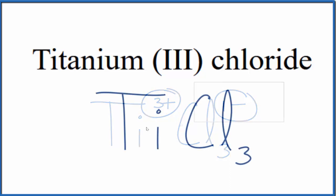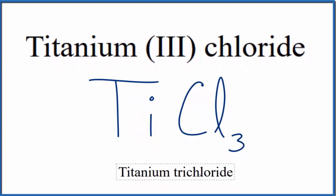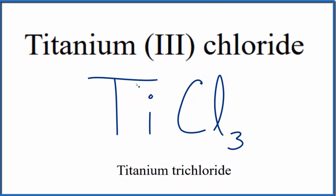So this is the formula for titanium 3 chloride, TiCl3. Sometimes this will be named titanium trichloride, where we have our titanium and then the three chlorine atoms here.